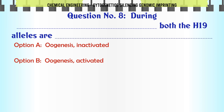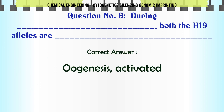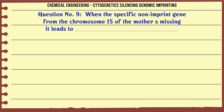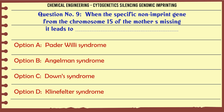During oogenesis, both H19 alleles are: A. Oogenesis inactivated, B. Oogenesis activated, C. Oogenesis hyperactivated, D. Spermatogenesis activated. The correct answer is B: Oogenesis activated.